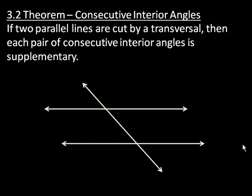Next up, theorem 3.2 — consecutive interior angles. It says if two parallel lines are cut by a transversal, then each pair of consecutive interior angles is supplementary, meaning they add up to 180 degrees. Likewise, this angle and this angle are not equal — they are not congruent. However, they add up to 180 degrees. They are consecutive interior angles.